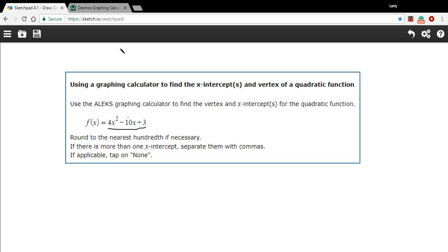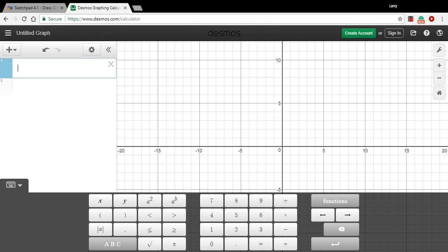So we've got 4x squared minus 10x plus 3. So I'm going to type that in here. I'm going to use y equals 4x, and I'll hit the squared button, and then minus 10x and plus 3.